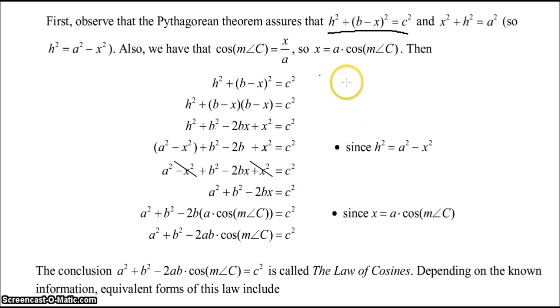And of course, X was A times cosine of the measure of angle C. We can substitute that here. And we get this last expression here, which is called the law of cosines.